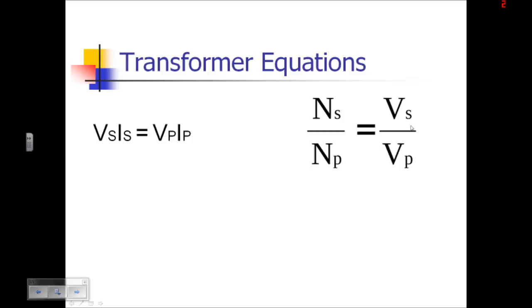The second equation, the ratio of turns, is going to be equal to the ratio of voltages. So your number of secondary turns over your number of primary turns is going to be equal to your secondary voltage over your primary voltage.